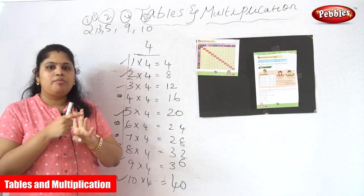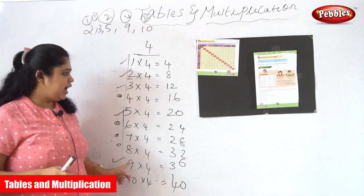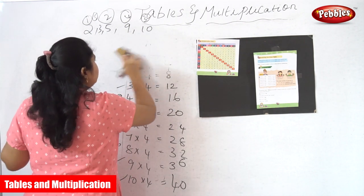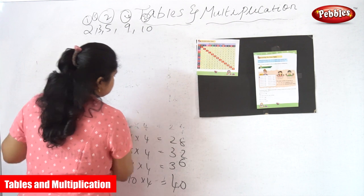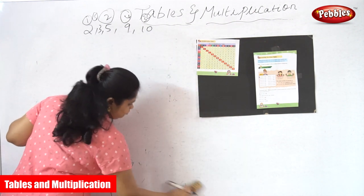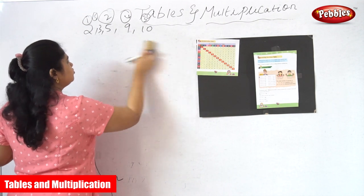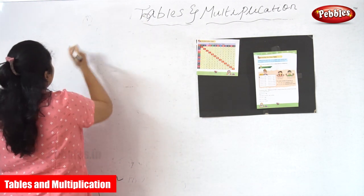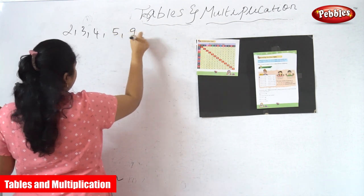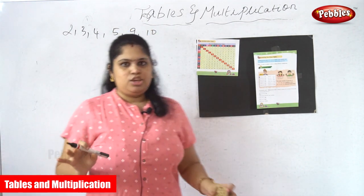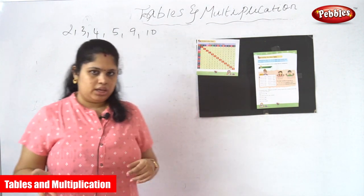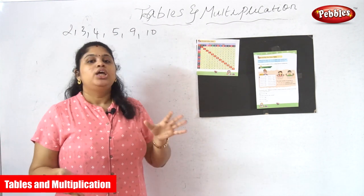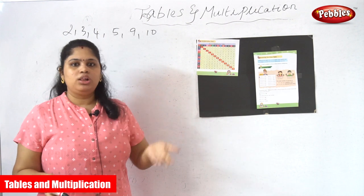Now the numbers you only have to concentrate on are 4, 6, 7 and 8. So now you know 2, 3, 4, 5, 9 and 10. In case you forget something like 6 into 9, or 6 into 4, or 7 into 3, you have a trick to recall the number. We all know the 5 tables because the 5 table is the very easiest table.